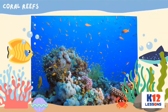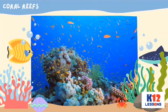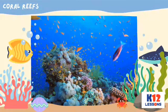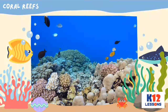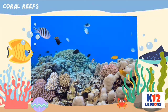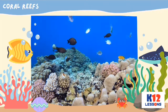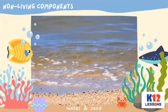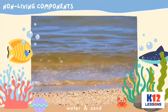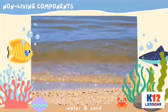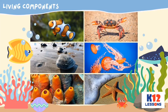Coral reefs serve as habitat for many animals. They are a breeding ground of marine life. Coral reefs are composed of non-living components such as water and sand, and living components such as fish, crustaceans, mollusks, cnidarians, sponges, and echinoderms.